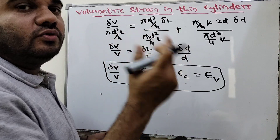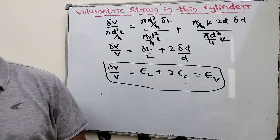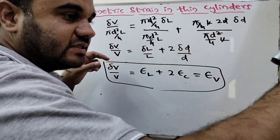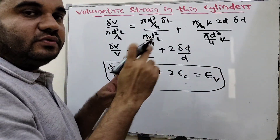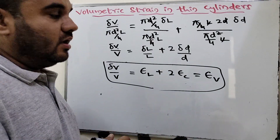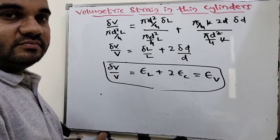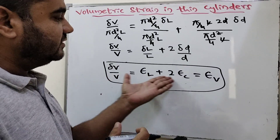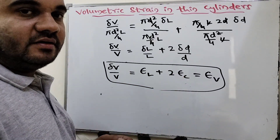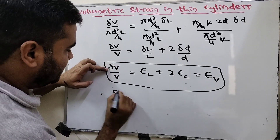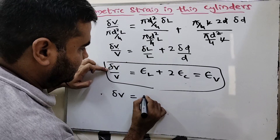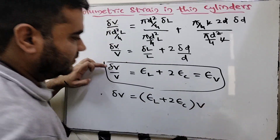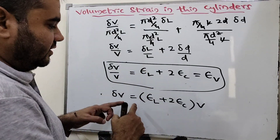So volumetric strain equals one times the longitudinal strain plus two times the circumferential strain. The circumference changes less and the longitudinal strain is bigger. Adding them in this proportion gives the total volumetric strain. If we want just the total volume change, we multiply both sides by the original volume V.